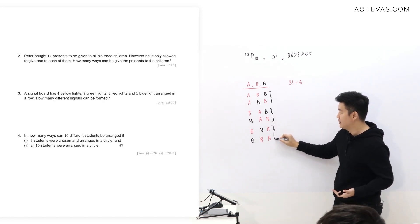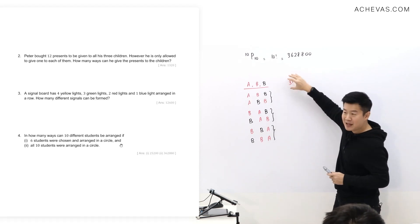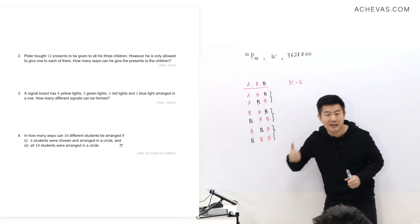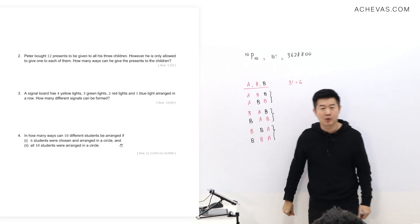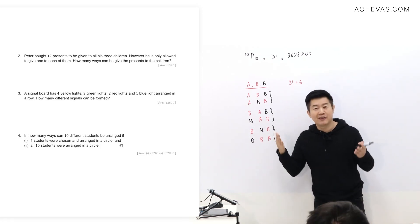This, they are also exactly the same. This, they are also exactly the same. Which means that if I were to apply the same counting principle to try to count an ABB scenario, I would not be able to get the answer.